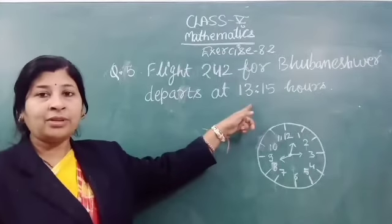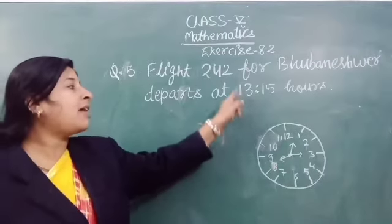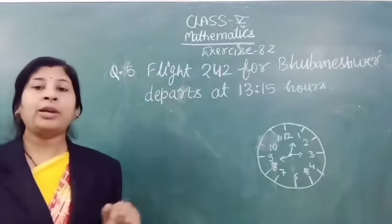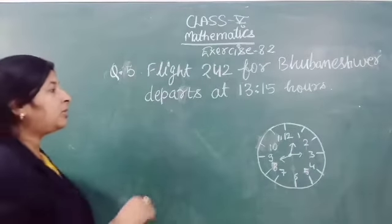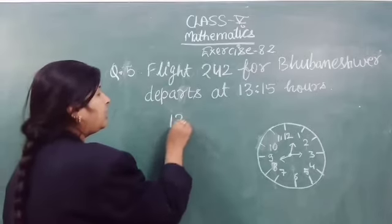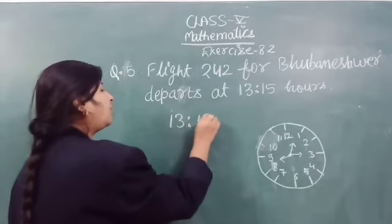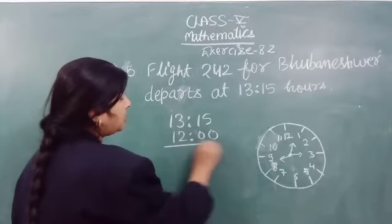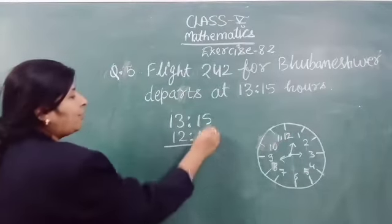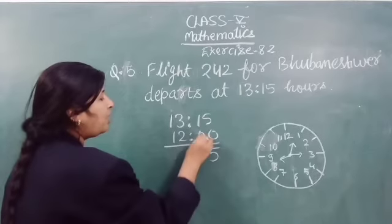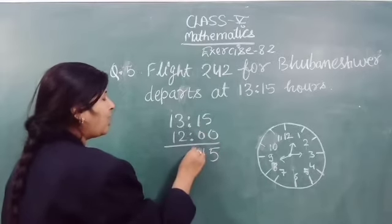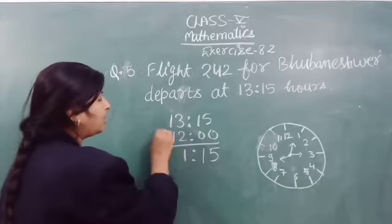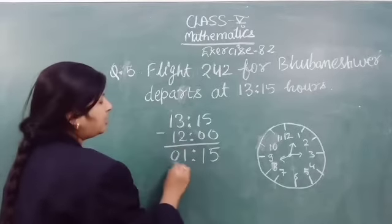Is it above 12? Yes, it is above 12. So, we minus 12 hours. So here: 13:15 hours minus 12 hours. This is noon shift time. So: 5, 1 minus 0 is 1, 3 minus 2 is 1, and 1 minus 1 is 0.